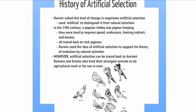So the history of artificial selection. Darwin was the first to use this term, and he used 'artificial' to distinguish it from natural selection. In the 19th century, a popular hobby was pigeon-keeping. Pigeons were selectively bred to improve their speed, endurance, homing instinct, and beauty, and all the different pigeons can be traced back to rock pigeons. Darwin used this idea of artificial selection to support his theory of evolution by natural selection.